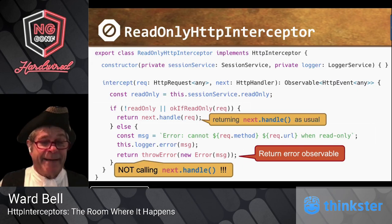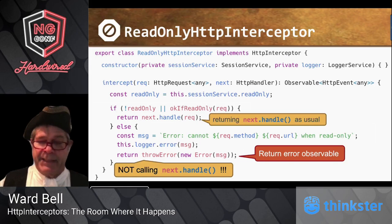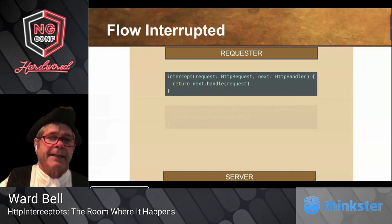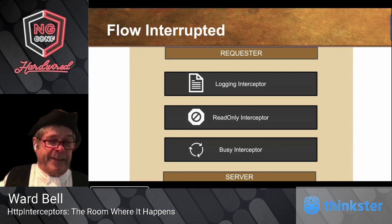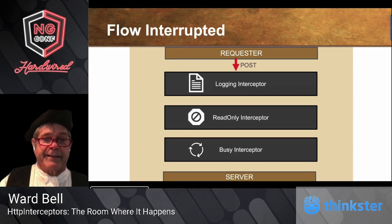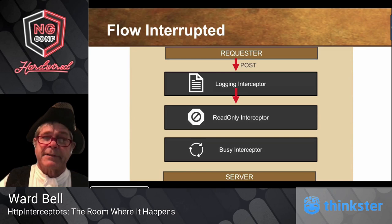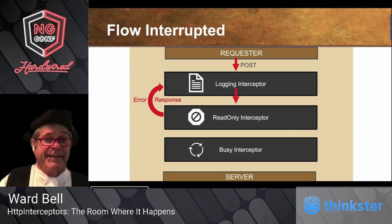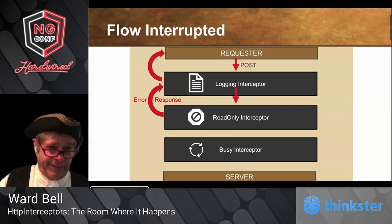One key thing to notice: I am not calling next.handle. I'm not handing this down to the next doll in the stack. So with our three interceptors — logging, read-only, and busy — the request goes to logging and gets logged, then to the read-only interceptor. Since it's a POST, it gets intercepted and an error response flows back to the requester. The busy interceptor never saw it, and the server never saw it.